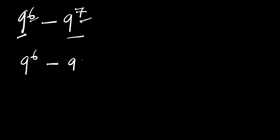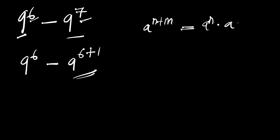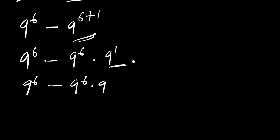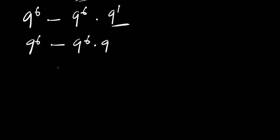9 power 7 is simply 9 power 6 plus 1. At this point we apply the identity: a^(m+n) = a^m times a^n. So we are going to have 9 power 6 minus 9 power 6 times 9 power 1, which gives us 9 power 6 minus 9 power 6 times 9, because 9 power 1 is 9.